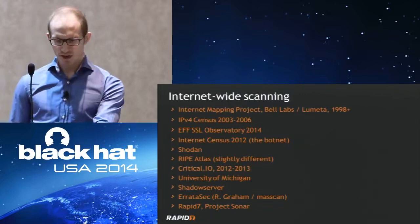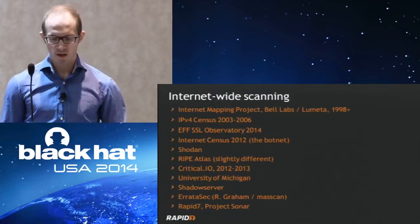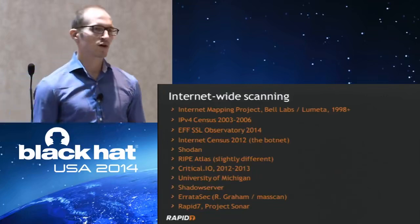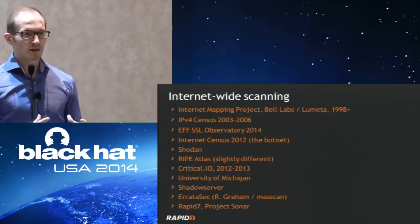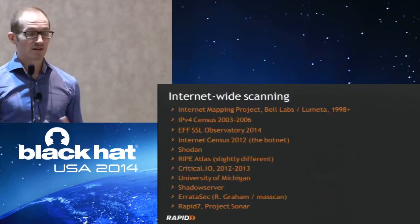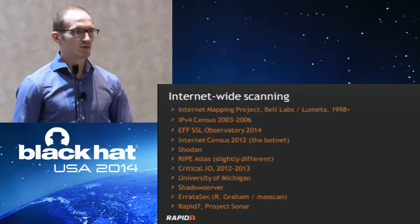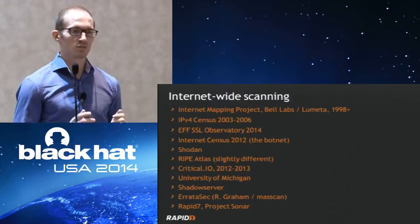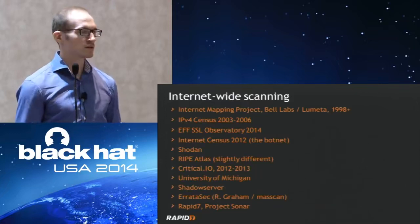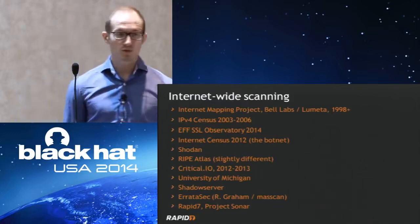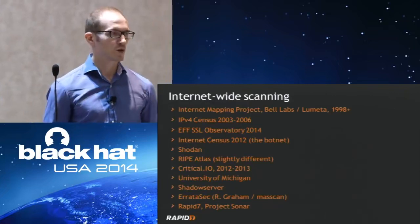The EFF SSL Observatory — I think 2010 is when it was — gathered all available SSL certificates on the internet. It was at least a three-month project, and they were able to show that there are misconfigurations, problems with certificate authorities, broken certificates, and duplicate name usage around the globe. They shared their dataset in raw form for researchers to work on, which was really awesome because everybody could take a look and verify their findings.